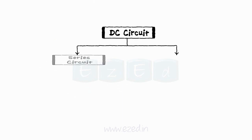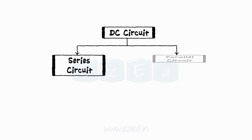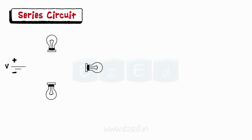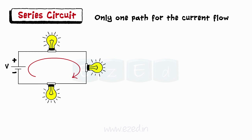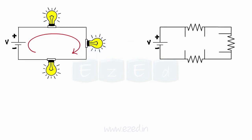There are two structures of DC circuit: series and parallel. In a series circuit, all the components are connected back to back and only one path is available for current flow. Here, we have three resistances connected in series with the voltage source V. When the current flows, every resistance consumes some amount of the voltage applied. This is known as a voltage drop.